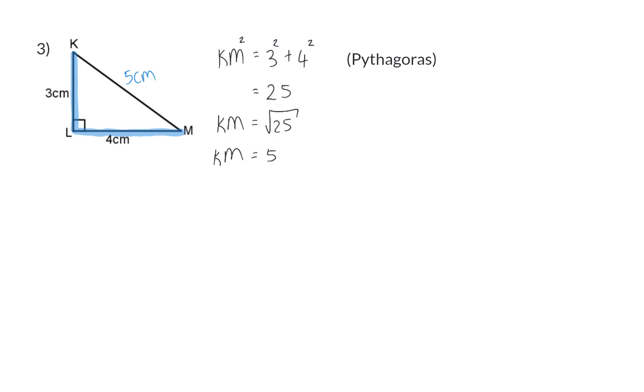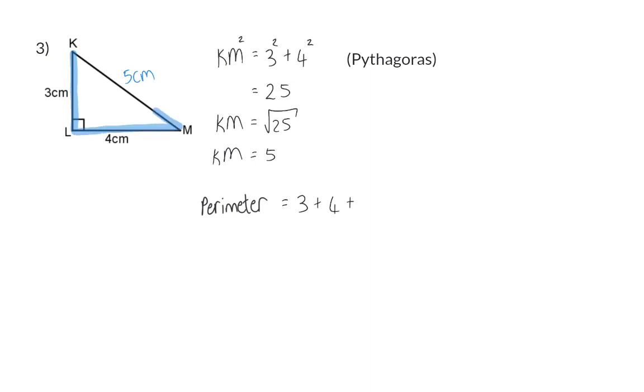So now we can go and calculate the perimeter of the triangle and that will be three plus four plus five which gives us the total of 12 centimeters.